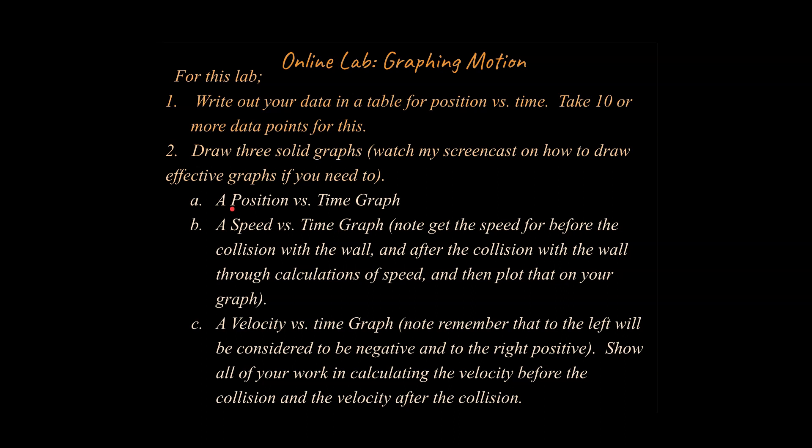Your first graph is a position versus time graph. You can kind of anticipate what this is going to look like if you know what you're doing — the buggy is moving in the negative direction. It starts out at a positive position and moves in the negative direction, so think about what the position is going to do with time as the buggy heads towards the curb and rebounds off of the curb.